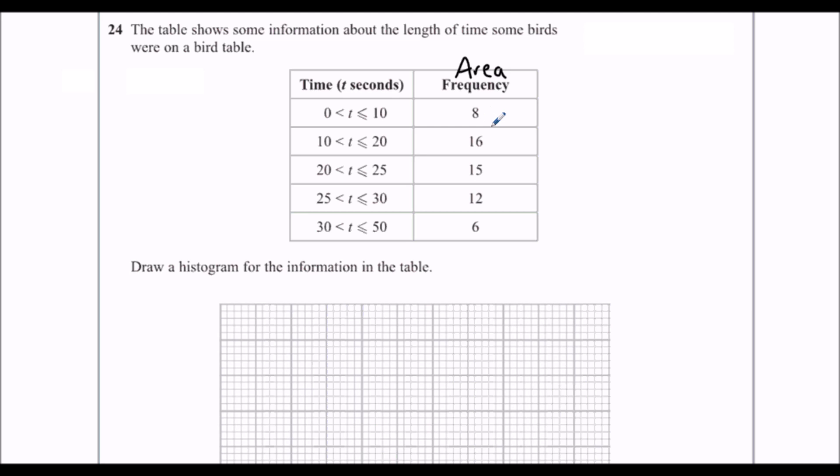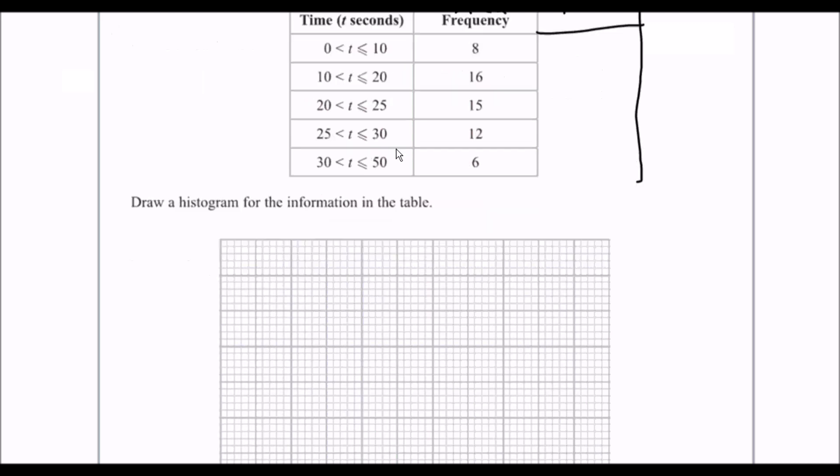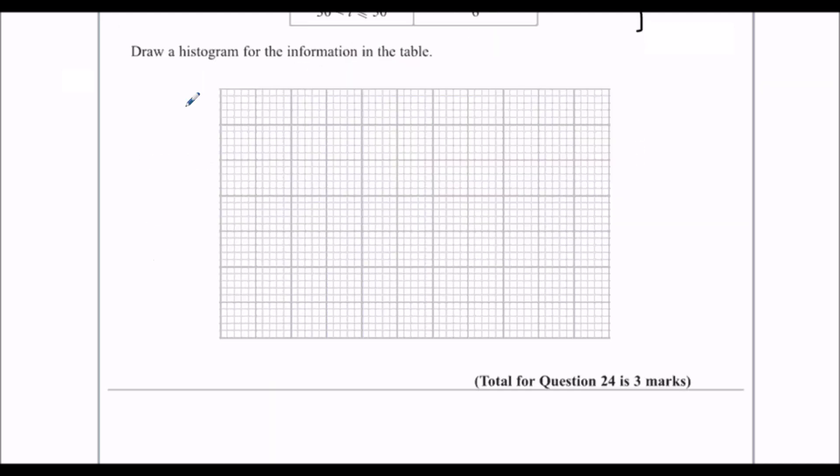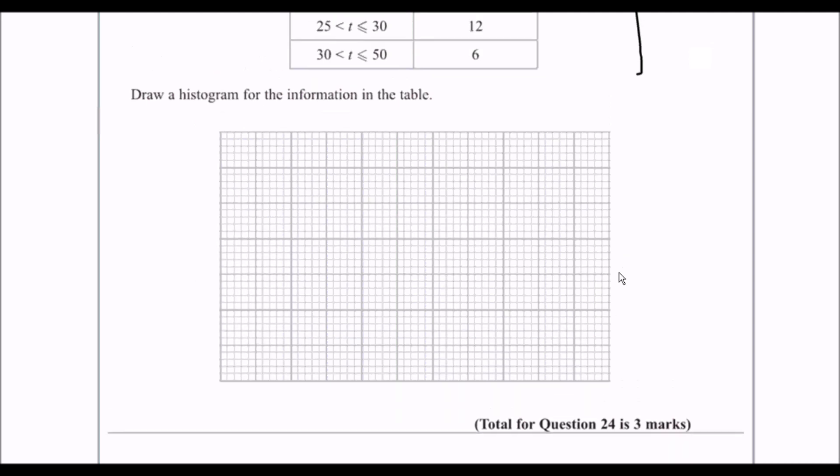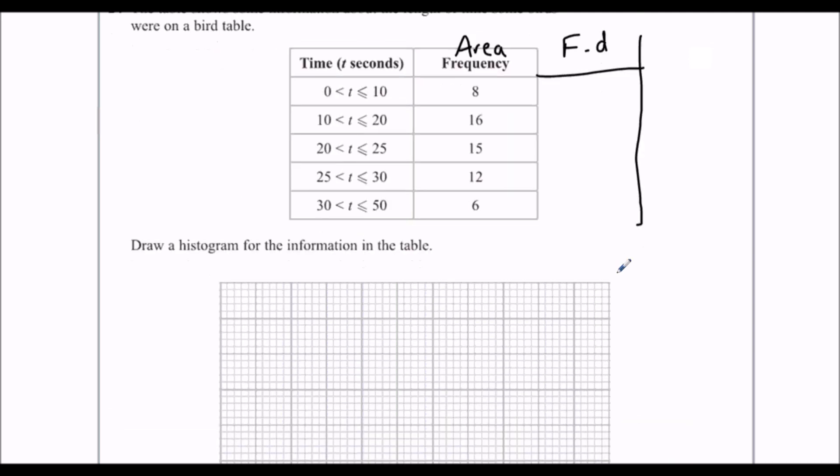This is actually the area and the height we're going to have to work out. So we're going to work out the height of the bar and that's called frequency density. So we have to draw the histogram, so we're going to have frequency density up the side and we're going to have our time on the bottom.